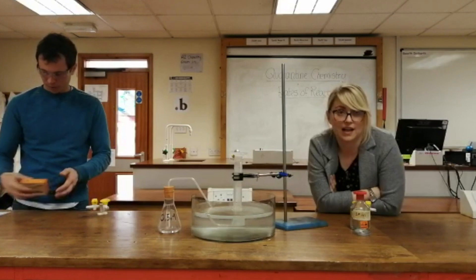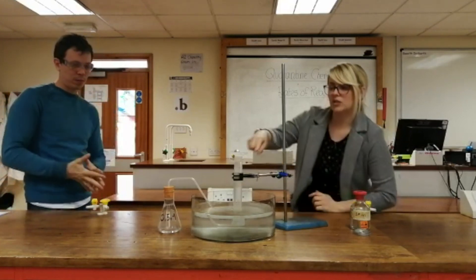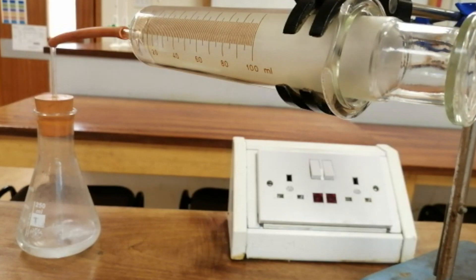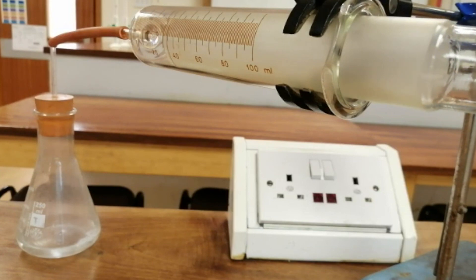Once you get to a certain point in year 10 and 11, we start to talk about how you can improve the experiment. There's a way you can do this with a gas syringe, which is even more accurate. We have these gas syringes - they look like giant Calpol syringes, but they're made of glass. They can collect the gas and the gas will displace and push out the syringe and you can read off there.